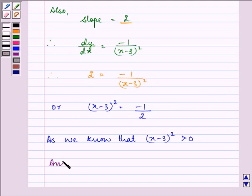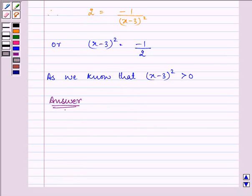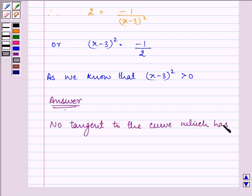we can write our answer as: no tangent to the curve which has slope as 2. Right?